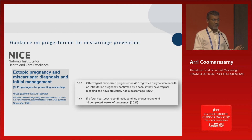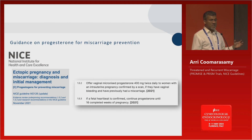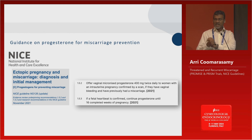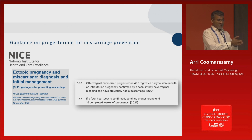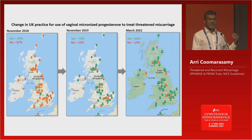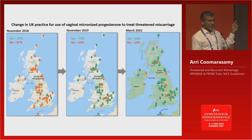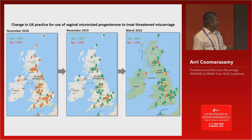Since then, this has become UK guideline. The UK is extremely conservative in terms of its recommendations, and the recommendation is now that in women who've got one or more previous miscarriages who are bleeding in early pregnancy, they should be given vaginal micronized progesterone from the time they present to 16 weeks. The practice has massively changed in the UK — our survey of early pregnancy units shows close to 90% adoption, which certainly wasn't the case before PRISM was published.